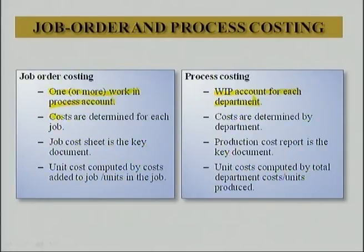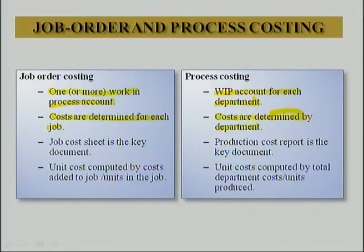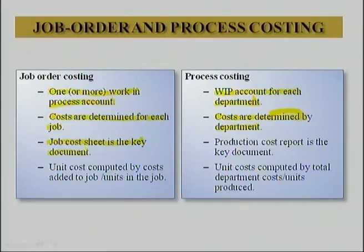In job order costing, costs are determined for each job separately. Whereas in process costing, costs are determined by department — not job-wise but department-wise. In job order costing, the job cost sheet is the key document used to accumulate costs. Whereas in process costing, the cost of production report is prepared to accumulate cost, and it is the key document.